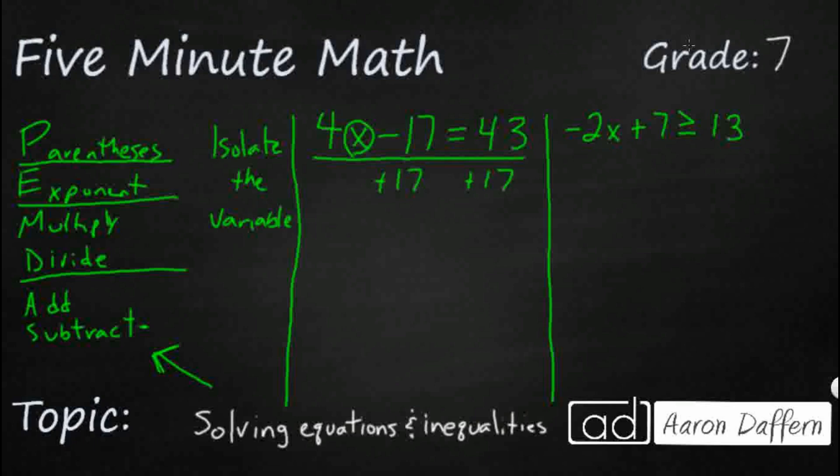Whatever you do on one side, you have to do on the other side. So minus 17 plus 17, that canceled itself out. So I've got a 4x equals, and I've got that's going to be 0, 60. So 4x equals 60. I don't have any add or subtract left.